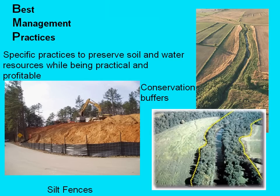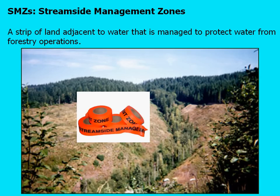Streamside management zones, also known as SMZs, are a type of best management practice. Similar to a conservation buffer, an SMZ involves leaving a strip of land adjacent to water to protect water resources from forestry operations. There are a number of voluntary BMPs, one of which includes leaving streamside management zones. Here in western North Carolina, the amount of space foresters leave can increase due to the presence of trout. An SMZ might be 50 feet on either side of the stream, or in sensitive waters up to 150 feet on either side, and these zones are often marked by flagging to make clear they are not to be disturbed.